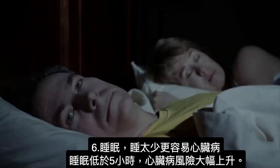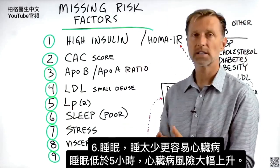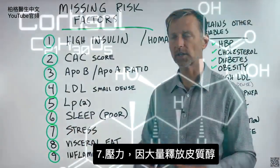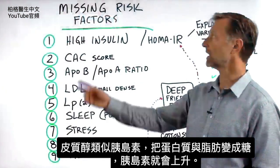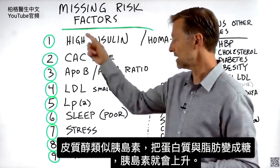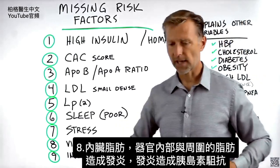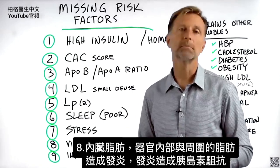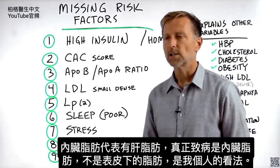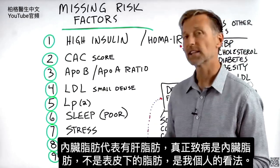Number six: your sleep. If your sleep is poor, it will increase your risk of getting a heart attack. In fact, if your sleep is less than five hours a night, your risk factor for heart attacks goes way up. Number seven: stress. Stress is a huge factor because of the constant release of cortisol. Cortisol tends to act like insulin, mobilizing proteins and fats and turning those into sugar, which then increases insulin. So number seven is really a part of number one. Number eight: visceral fat — the fat around your organs that gives off inflammation, and inflammation causes more insulin resistance. If you have visceral fat, that also means you have liver fat. It's not the superficial subcutaneous fat — it's the visceral fat that's pathogenic.